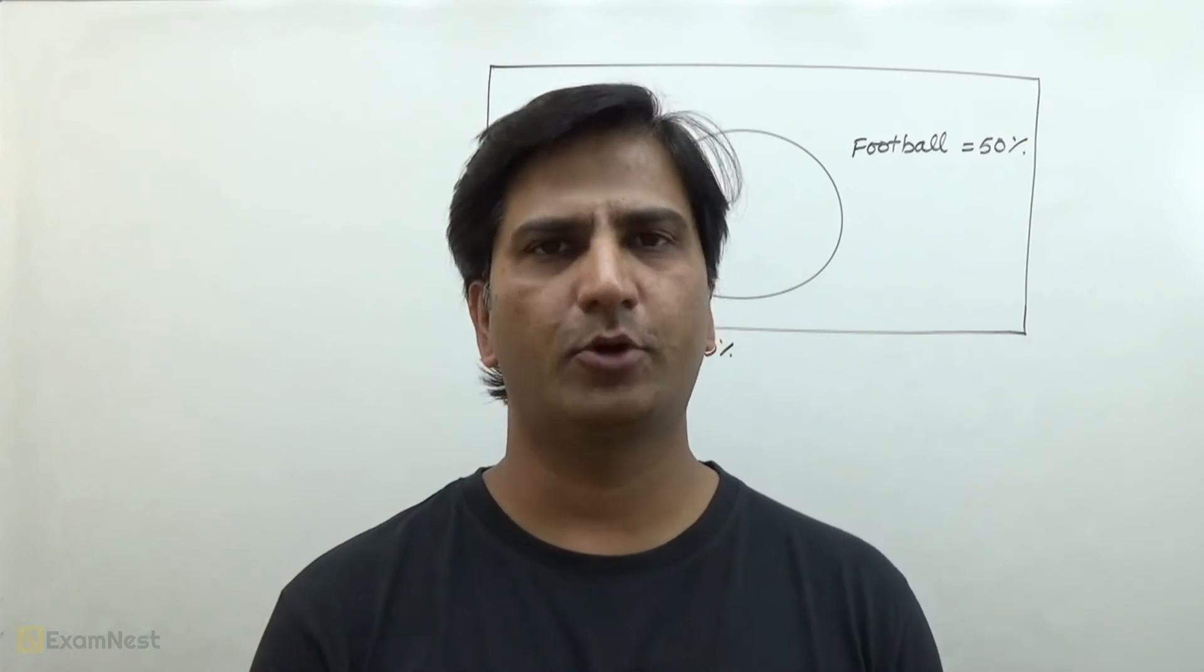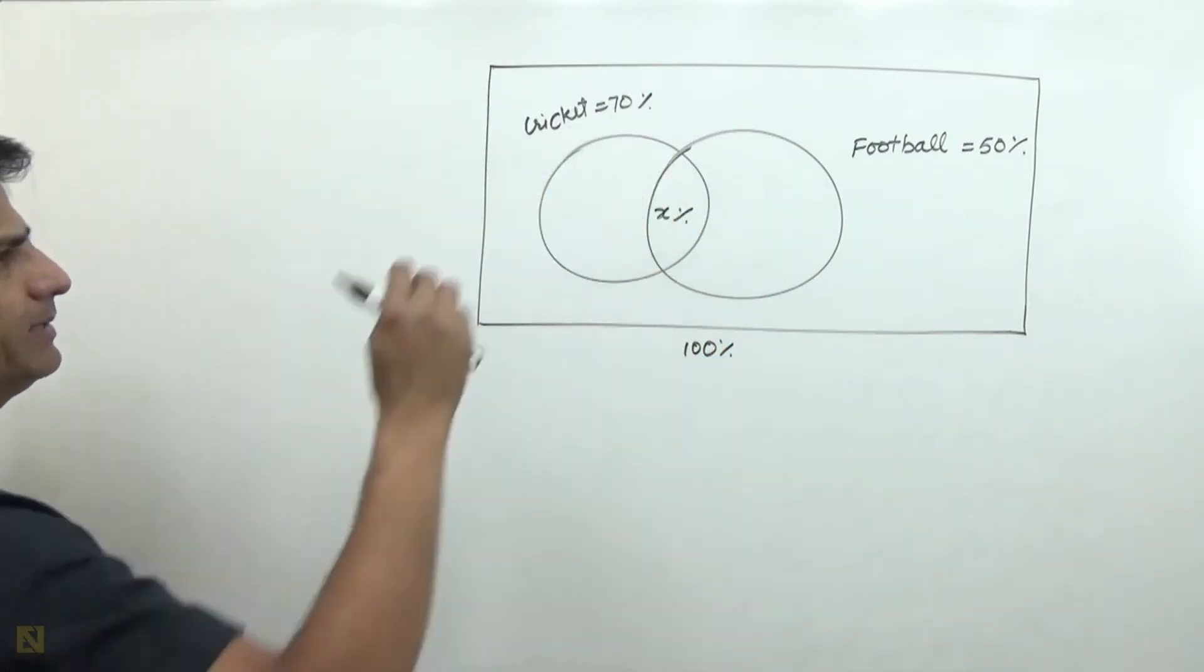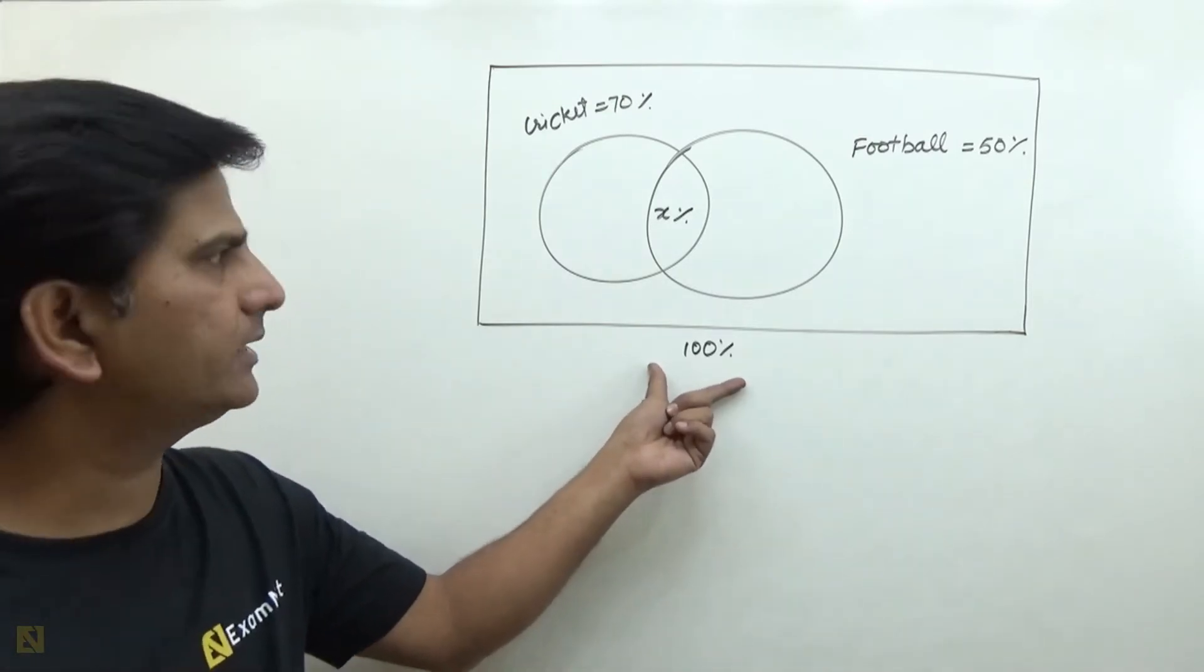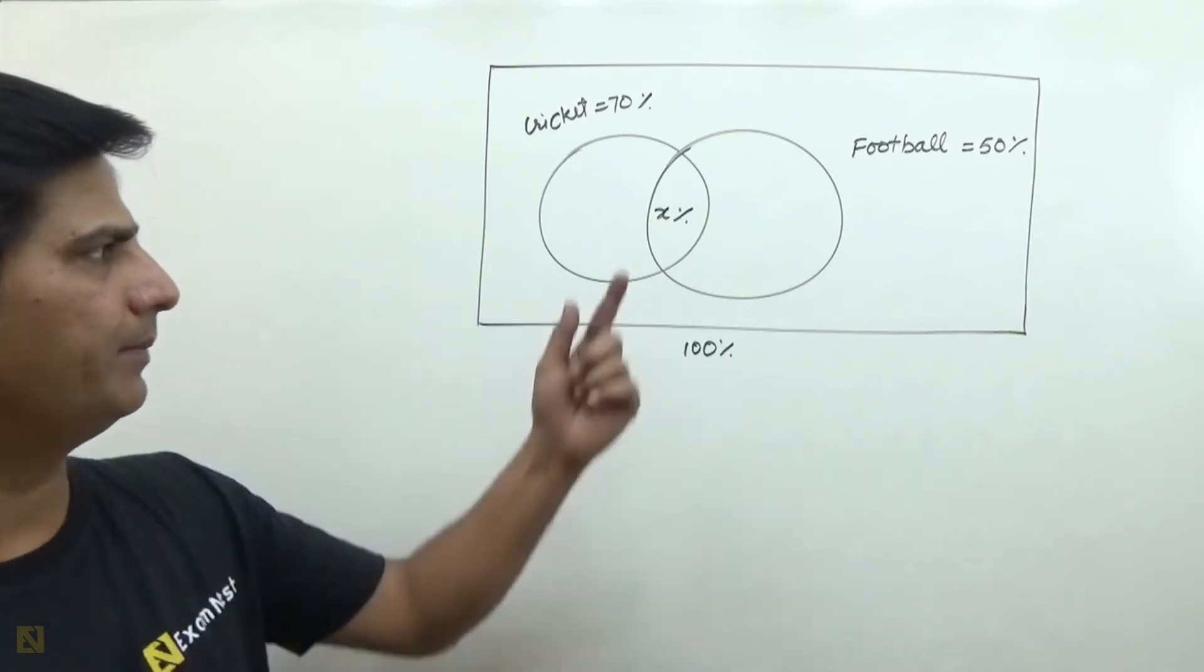This question is a moderate level question. 70% cricket, 50% football, and 100% total we can say strength here. X percent like both games. We need to know the range of X.